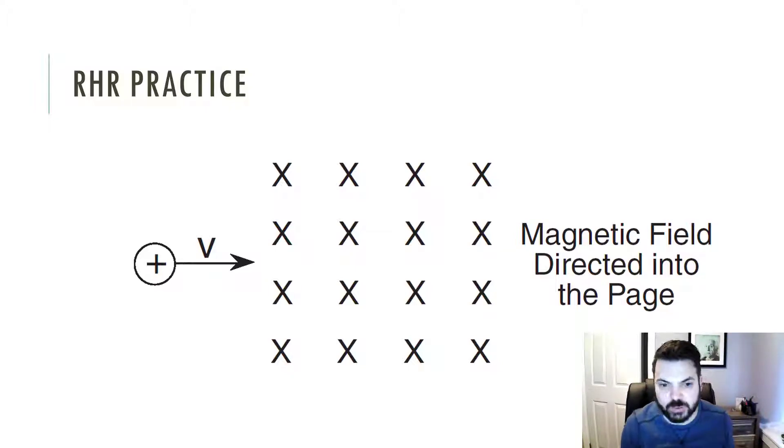All right, so here's the first one that I think we started with in class. As a recap, we have a positive charge moving to the right through a magnetic field into the page.